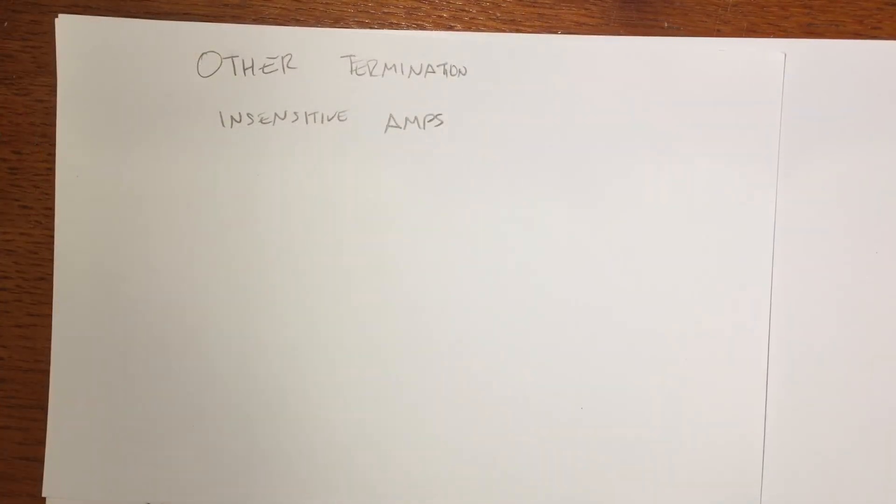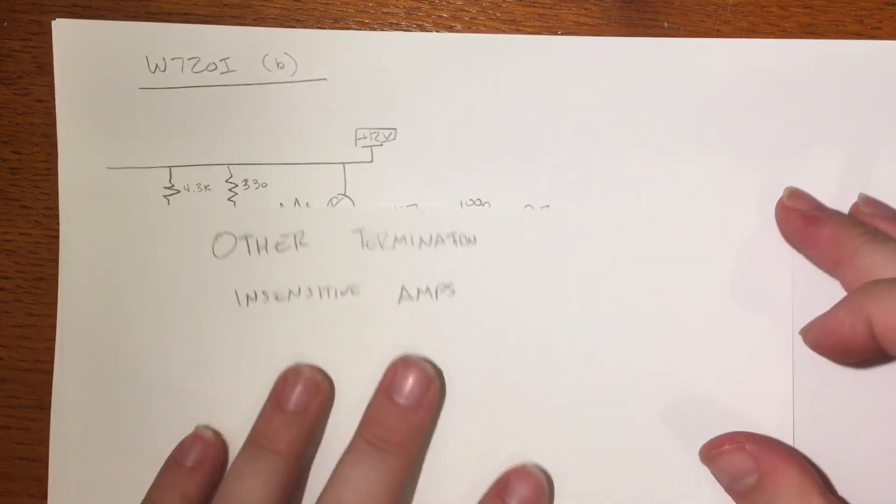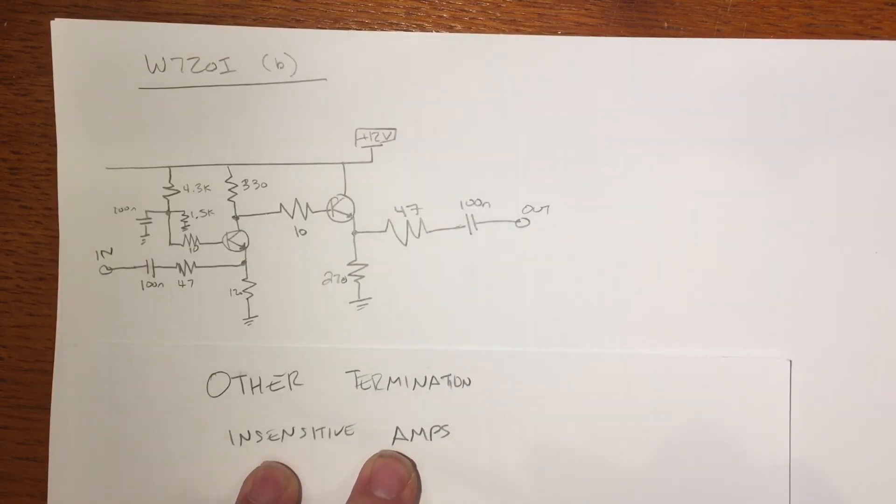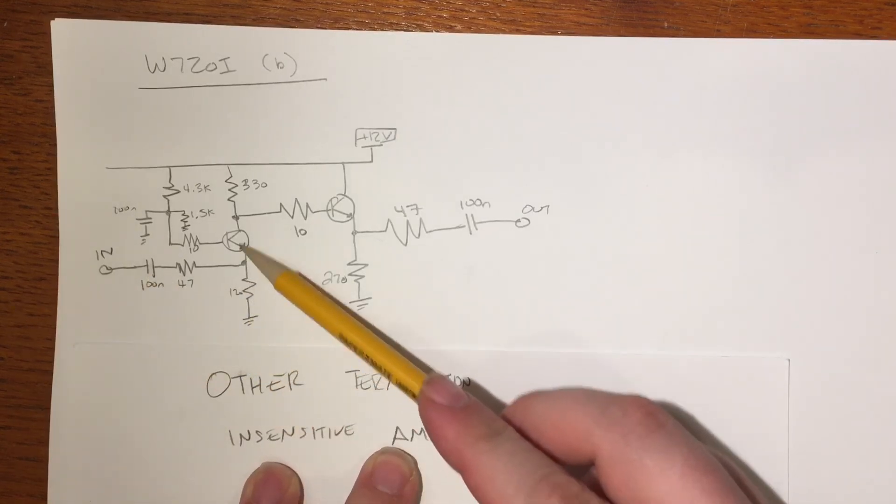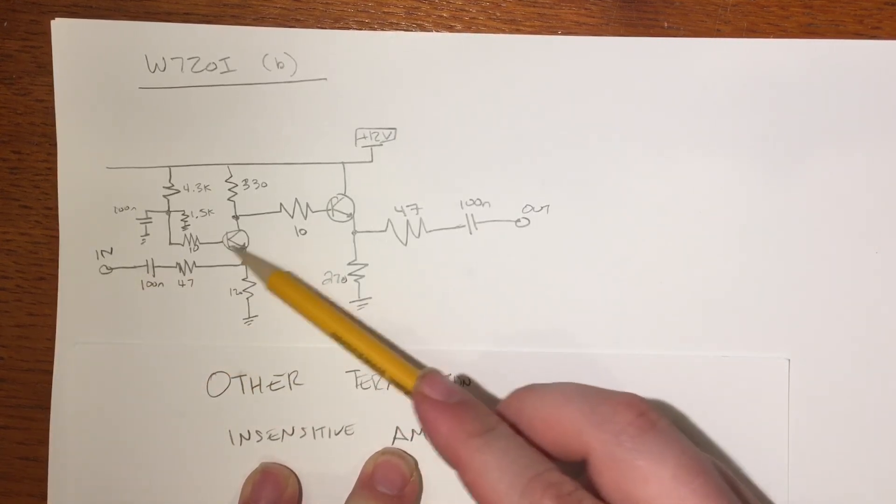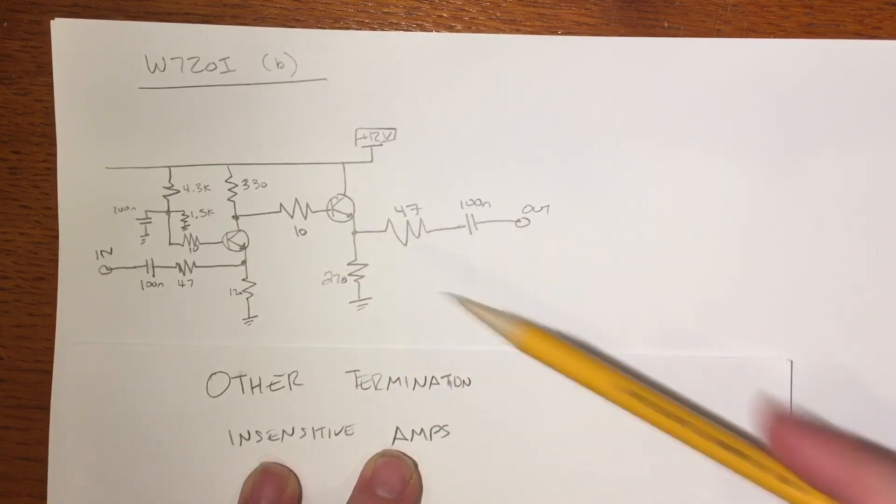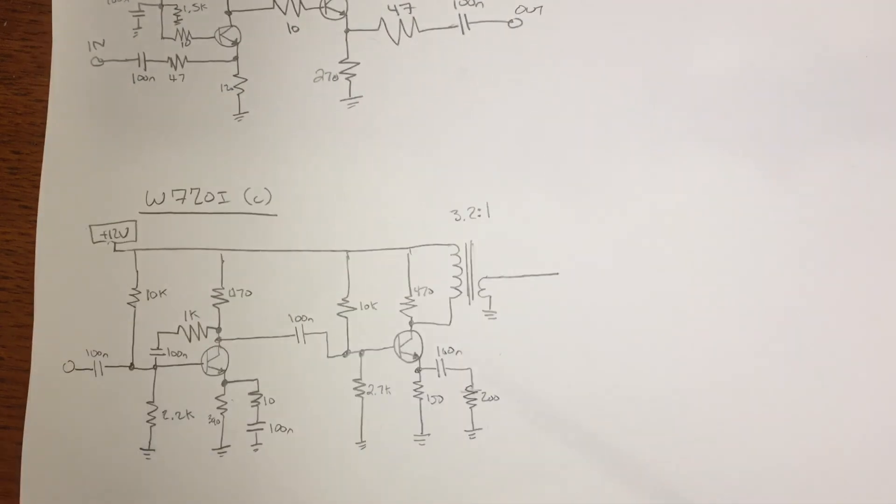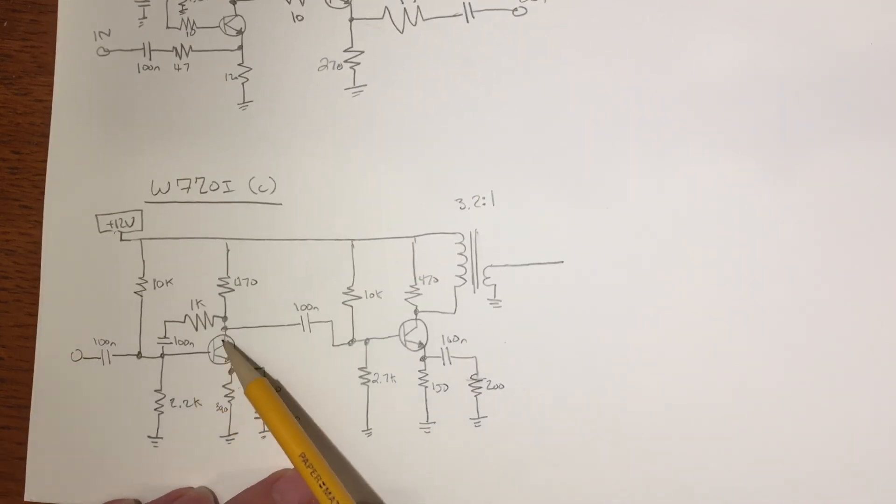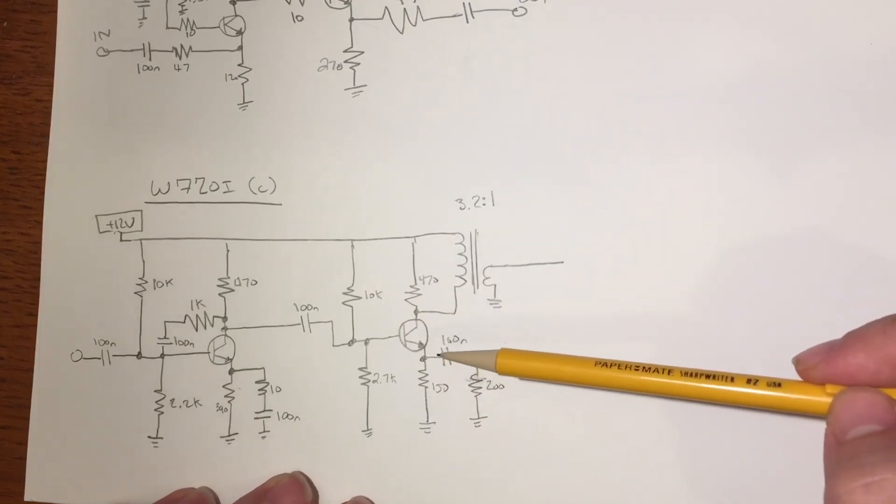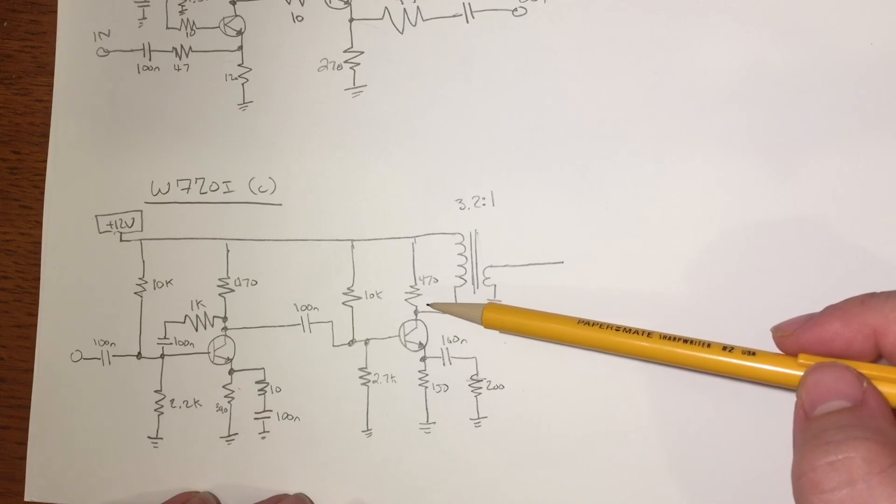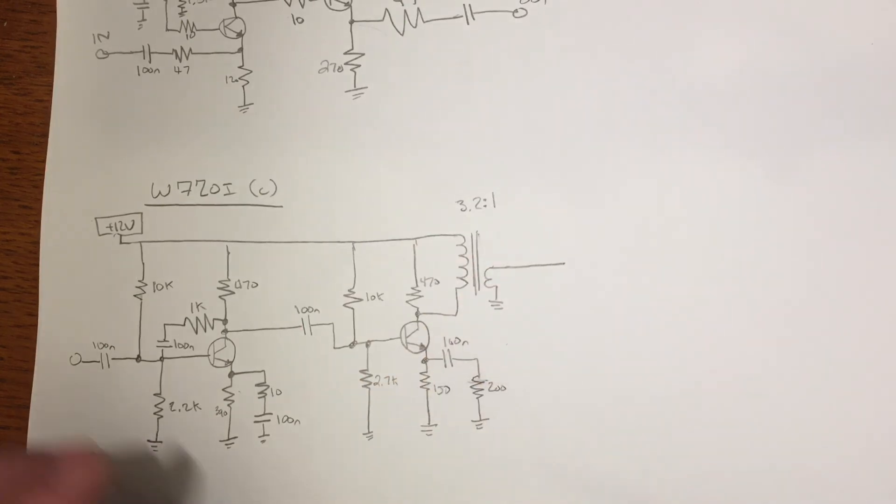Of course, there are other termination insensitive amplifier designs, some based on similar principles and some which vary slightly. Here's another design from W7ZOI in that same paper. This one actually starts with a common base amplifier. You can see the signal coming in through the emitter of this NPN transistor. And then it too has a common collector buffer and a series resistor to set the output impedance. And from that same paper, here's actually another termination insensitive amplifier, which just has two common collector stages and then some transformer actions to set the final output impedance. Wes Hayward calls this not a termination-sensitive design, but says it has reduced termination sensitivity. So this one may be worthy of some further study.